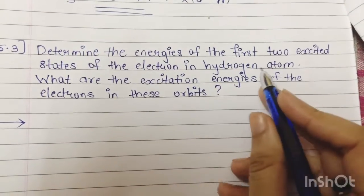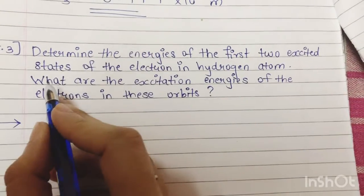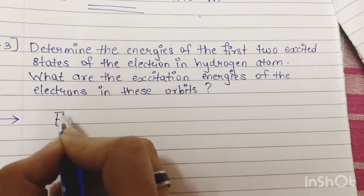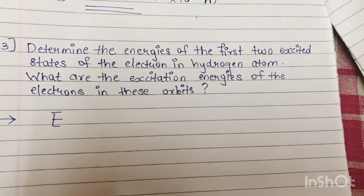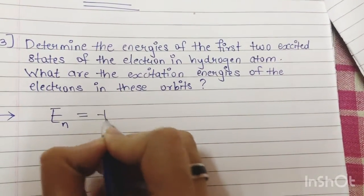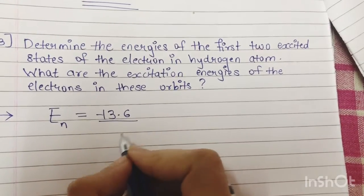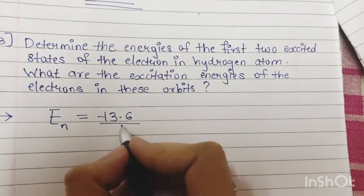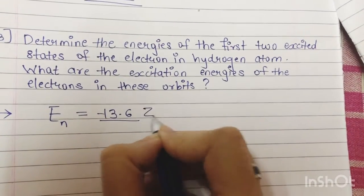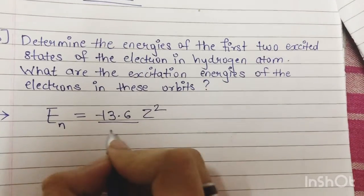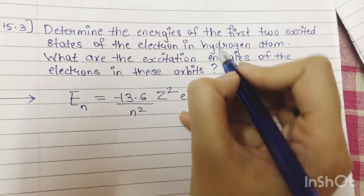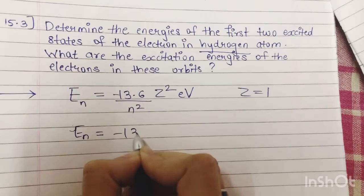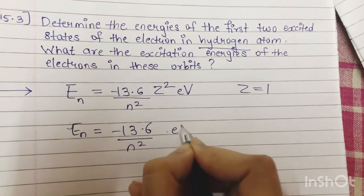Starting with numerical number 15.3: determine the energies of the first two excited states of the electron in a hydrogen atom. First we'll write the formula. The formula is En = -13.6 Z²/n² electron volt. If you see it in your textbook on page 328, the formula is written as 15.8 Z square upon n square electron volt. Now this is for a hydrogen atom, so the value of Z is 1. So En = -13.6/n² electron volt.